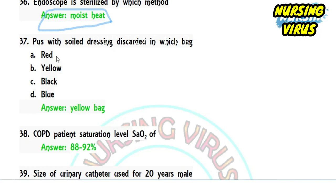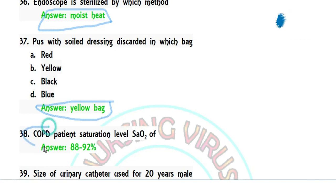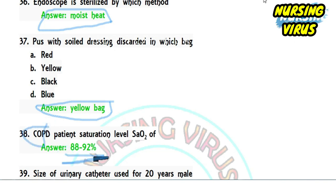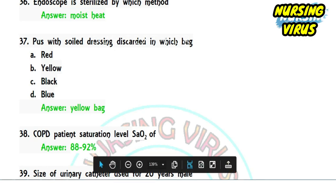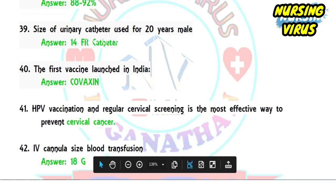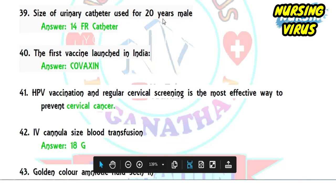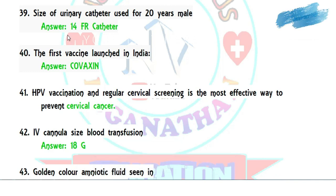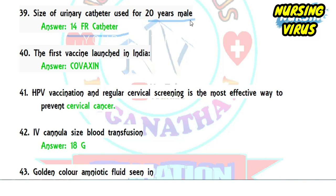Question 37: soiled dressings are discarded in which waste bag — red, yellow, black, or blue? Soiled dressings should be discarded in the yellow bag. Question 38: the oxygen saturation level commonly seen in COPD patients is 88–92%, and oxygen administration may be needed. Question 39: the catheter size used for a 20-year-old male is 14 French, which is standard for adult males.